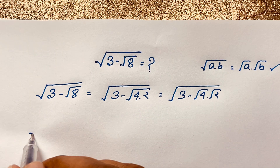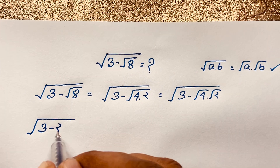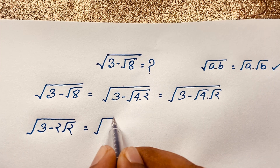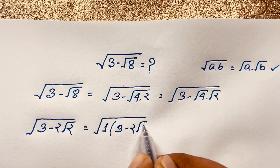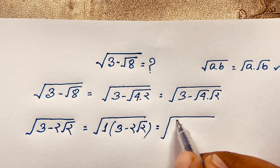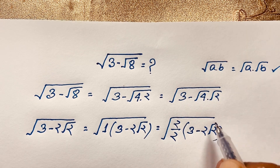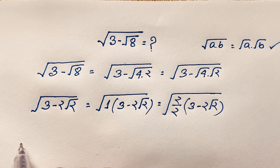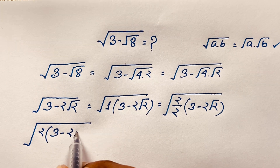So this expression becomes square root of (3 minus square root of 4 times square root of 2), and square root of 4 is 2, so we have square root of (3 minus 2 square root of 2). Now we rewrite this expression as square root of 2 times (3 minus 2 square root of 2) all over 2.